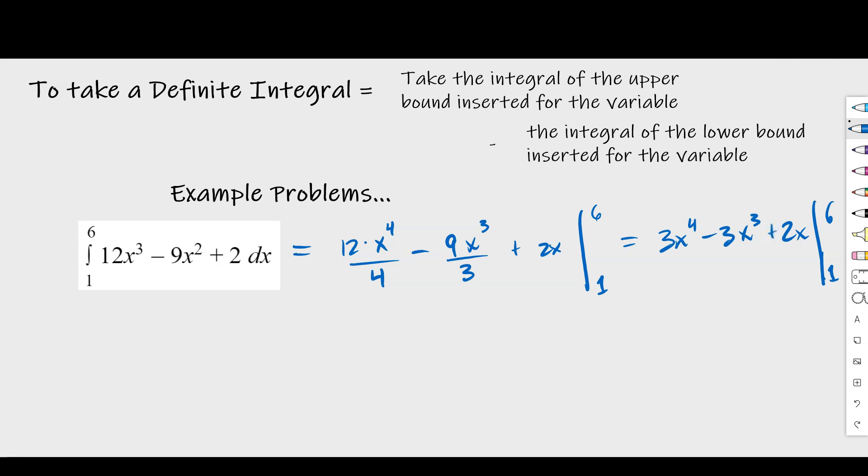and then do the same thing for the lower bound and subtract the lower from the upper. So let me show you what I'm talking about. So that's going to be equal to, and I'll use brackets here, 3 times 6 to the fourth minus 3 times 6 to the third plus 2 times 6 in brackets. So that's my upper bounds.